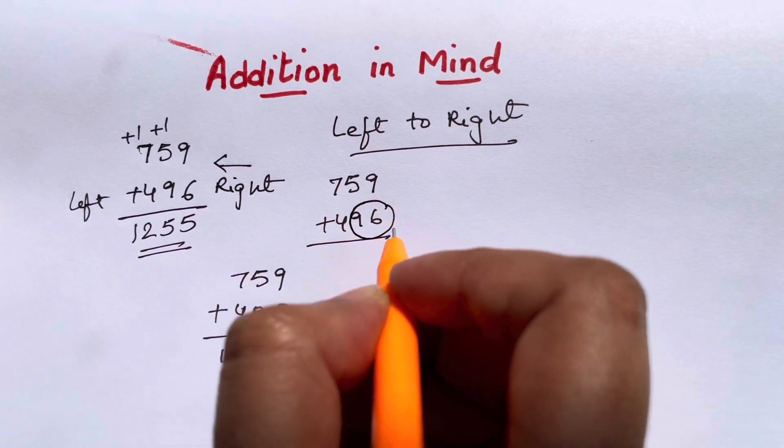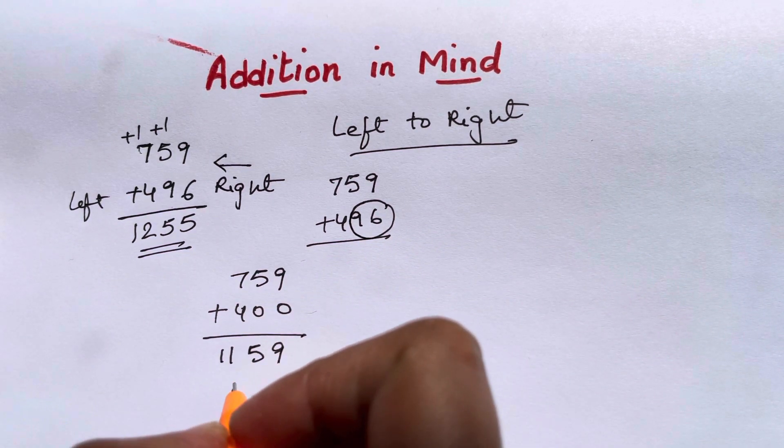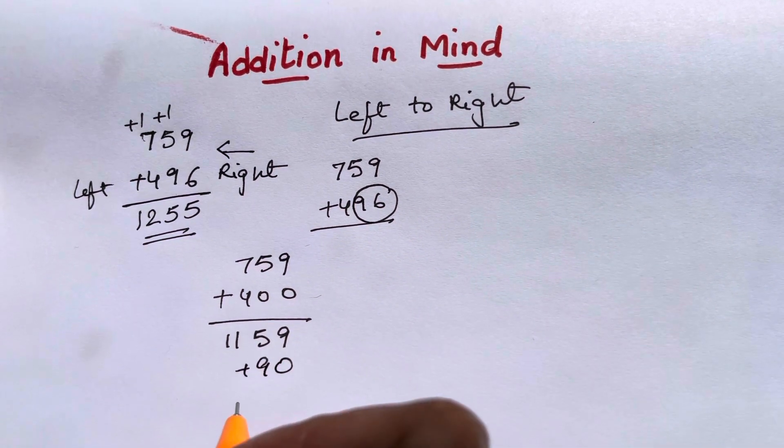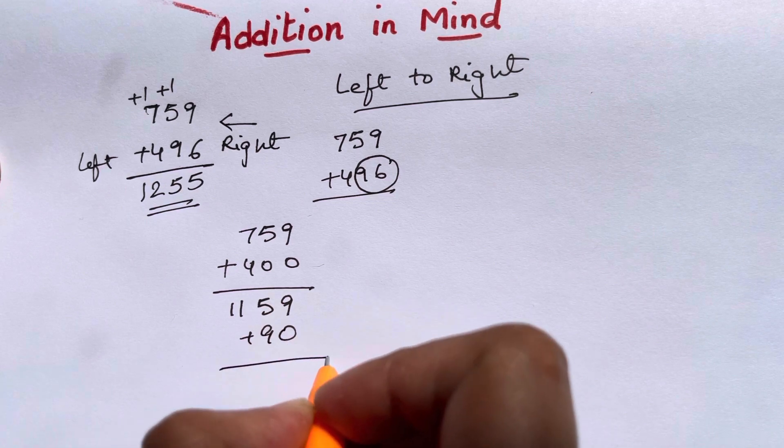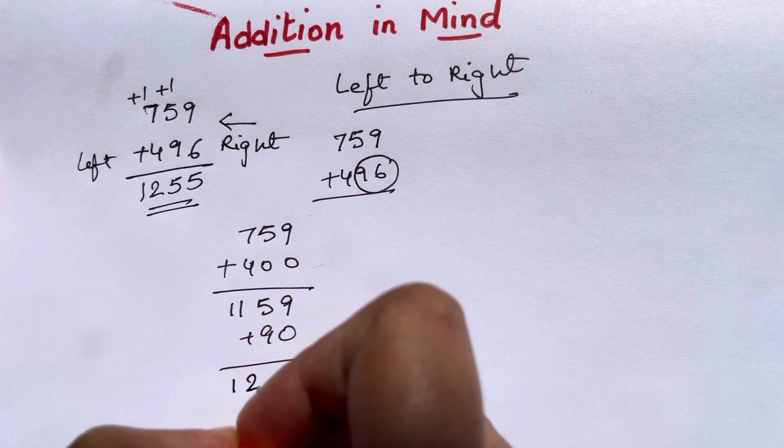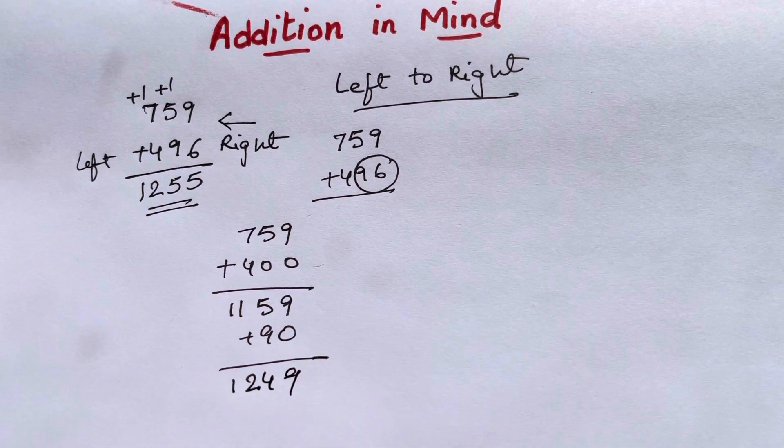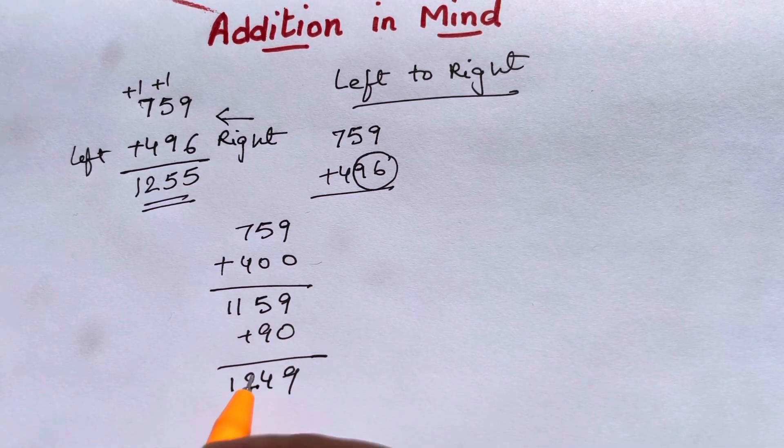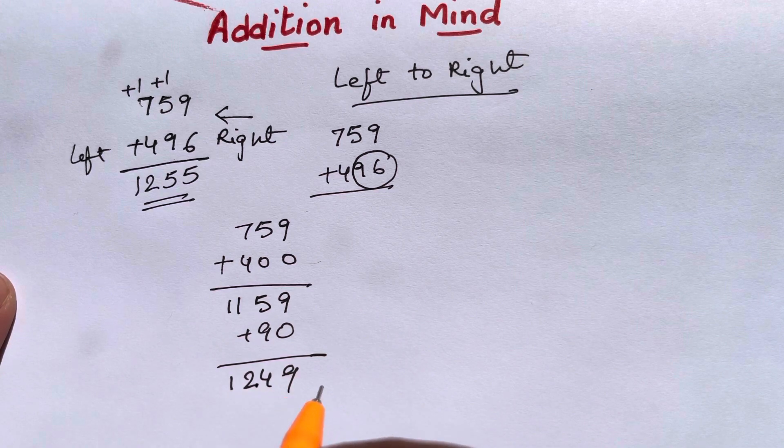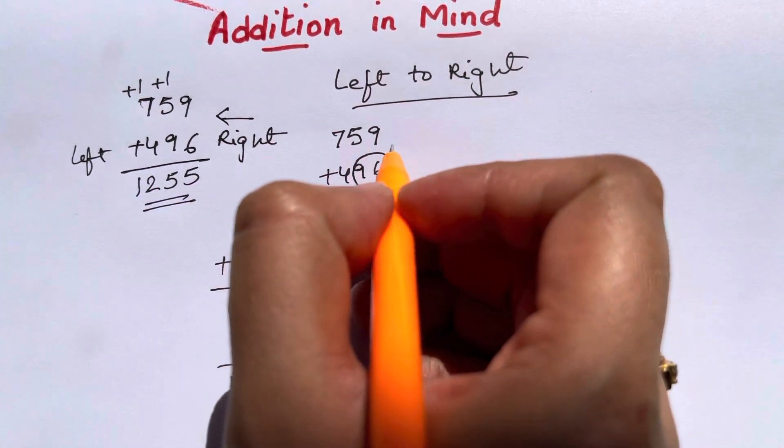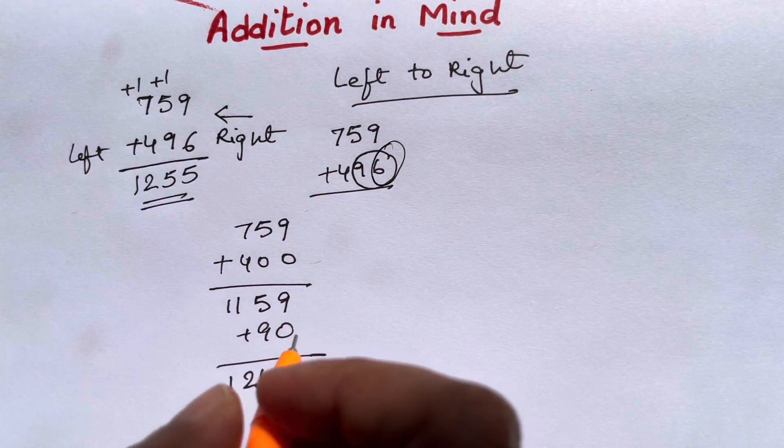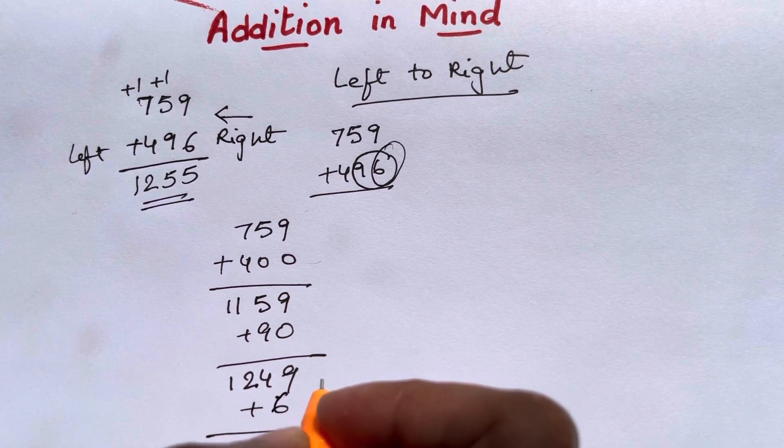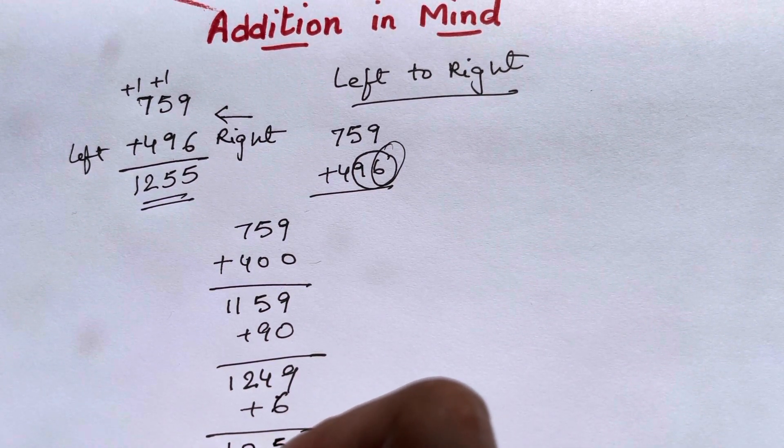Now you need to add the next two digits, that is 96. 1159 plus 90 will give you 1249. 9 plus 5 that's 14 and you have a carry, so you got 1249. Now you're going to add 6 in mind quickly. 1249 plus 6 will give you 1255.